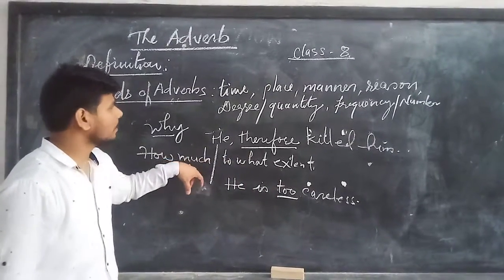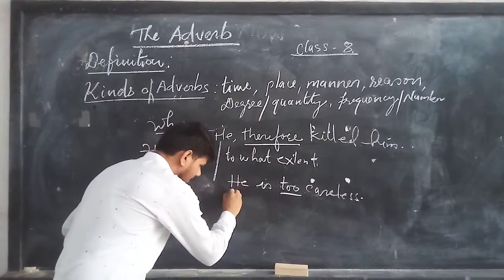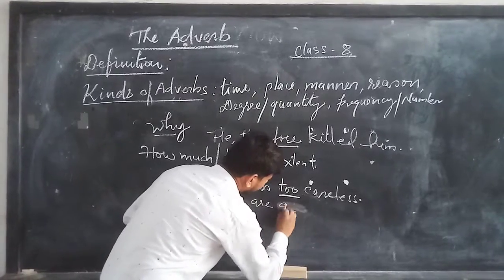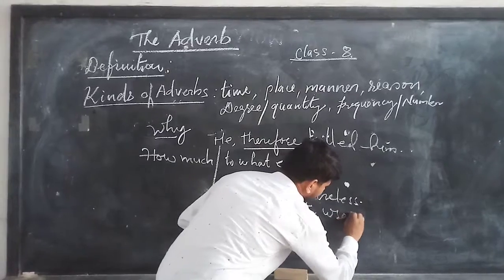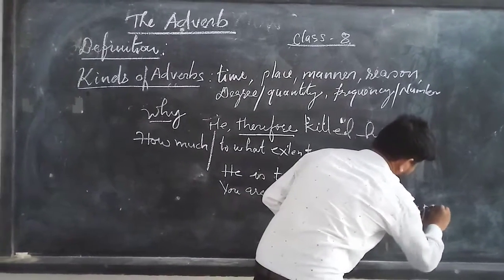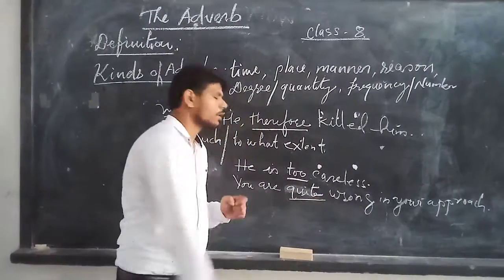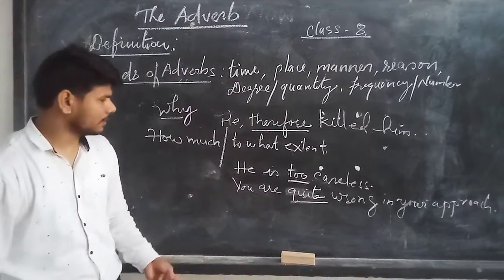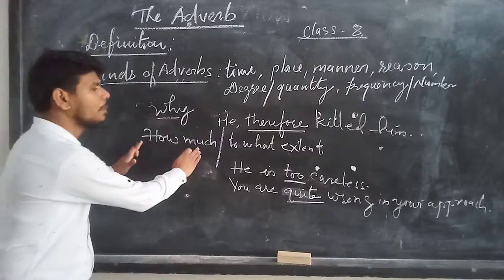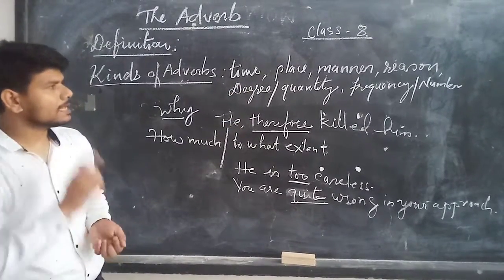One more example: you are quite wrong in your approach. Here we see the word 'quite'. Quite — to what extent? So 'quite' talks about quantity or degree. It always asks the question 'how much' and 'to what extent'.